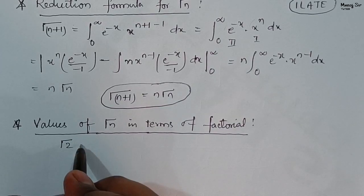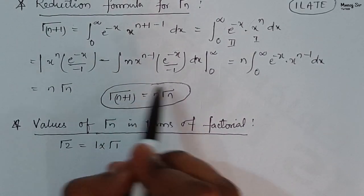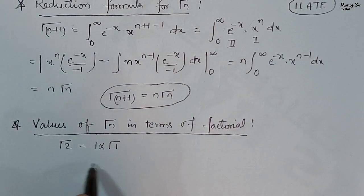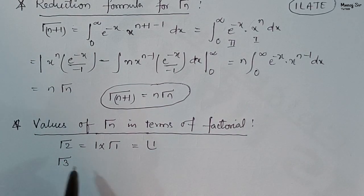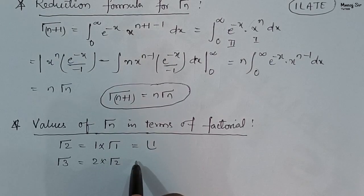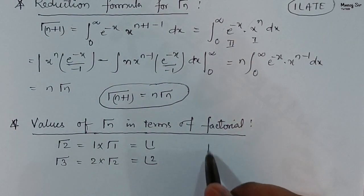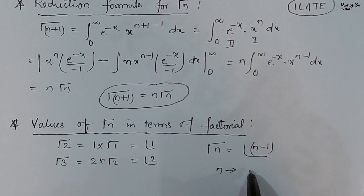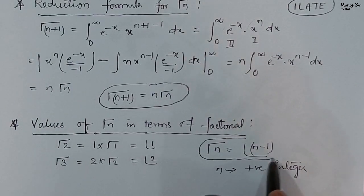Using the reduction formula, Gamma(2) equals 1 times Gamma(1), which equals 1, and this is the value of 1 factorial. Similarly, Gamma(3) equals 2 times Gamma(2), which equals 2 factorial. Gamma(4) equals 3 times Gamma(3), which equals 3 factorial. So in general, Gamma(n) equals factorial of n minus 1, where n is a positive integer. This result is very, very important.